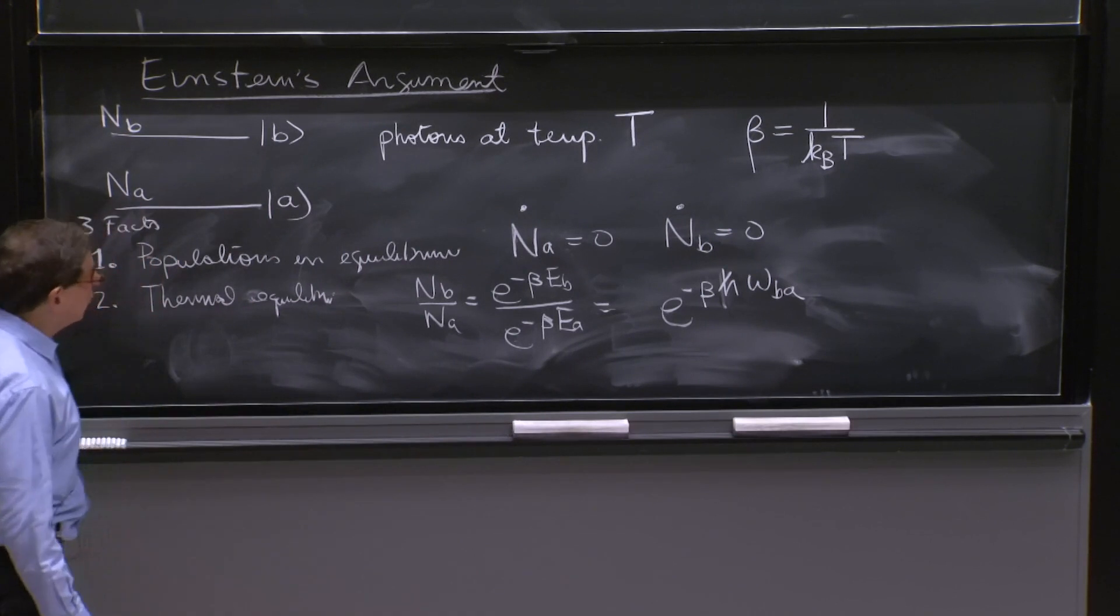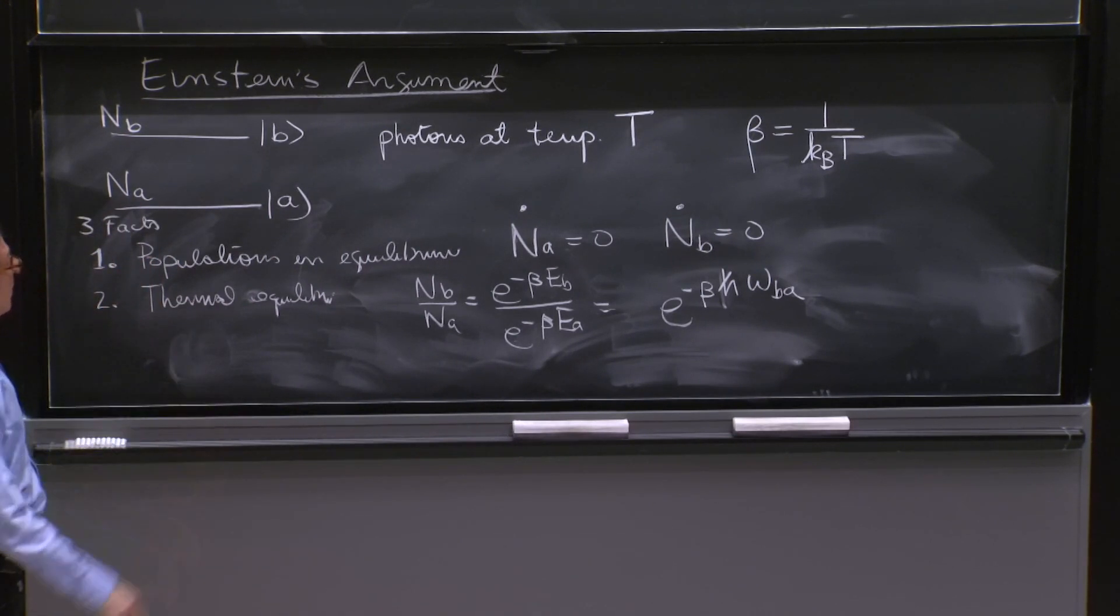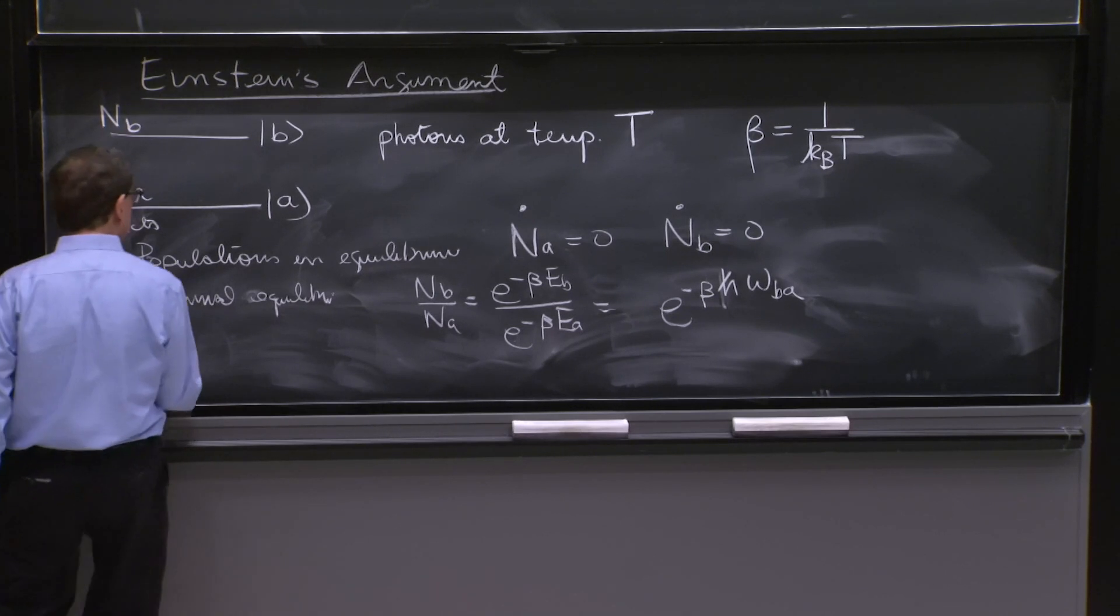You get e to the minus beta Eb minus Ea, but Eb minus Ea is h bar omega ba. So that's thermal equilibrium.